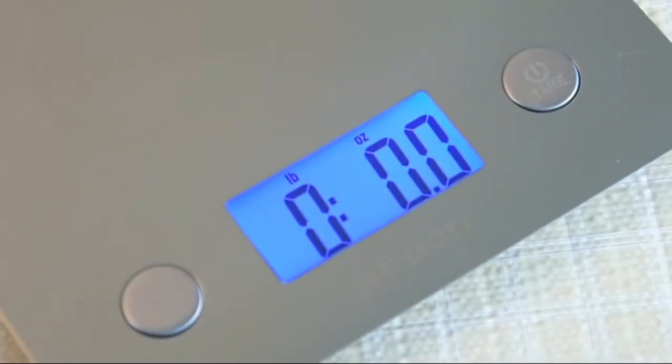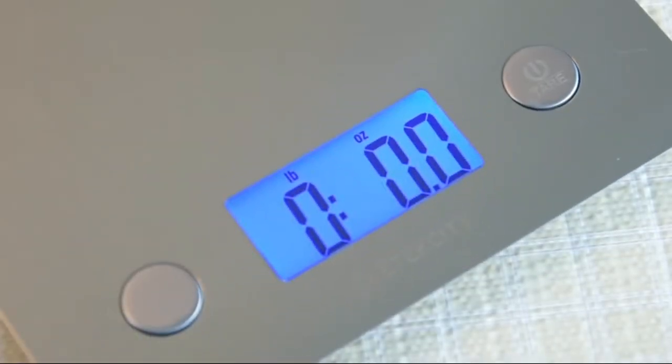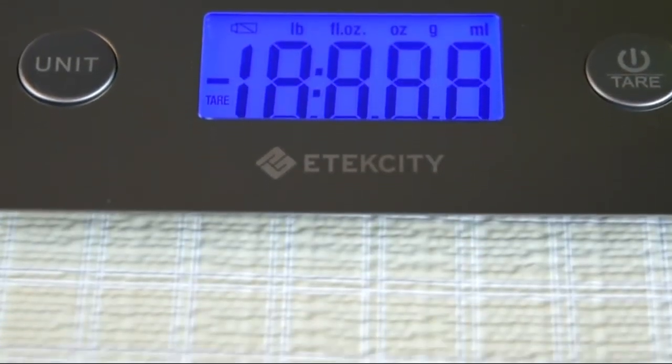An auto-zero function even recalibrates the scale after each measurement. No need to fiddle with the scale before your next measurement.